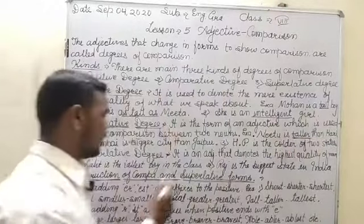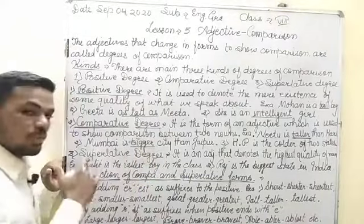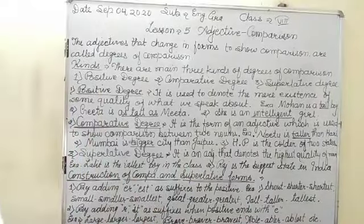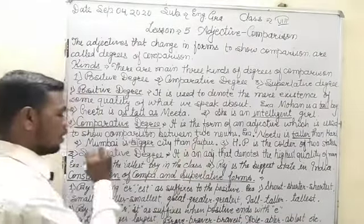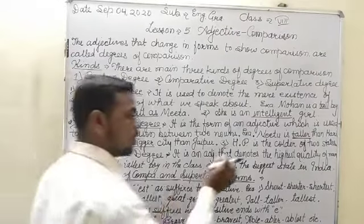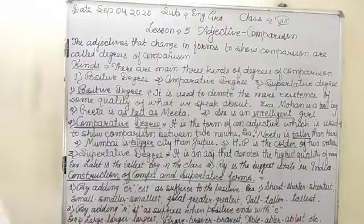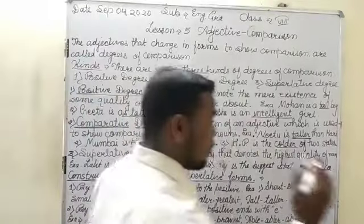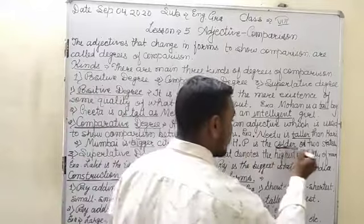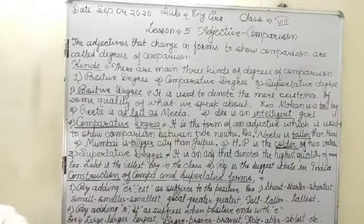'Mumbai is a bigger city than Jaipur' means if we compare with Jaipur, Jaipur is smaller than Mumbai. 'Himachal is colder of the two states' — if we make a comparison between two states, Himachal is colder than the other state.